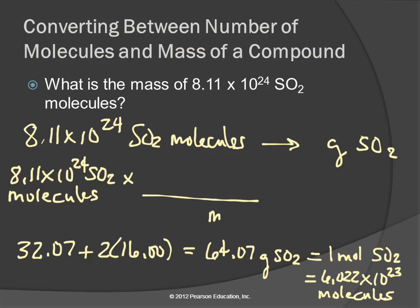We want to divide by molecules and multiply by grams. From our calculation of the molar mass, we know that there are 64.07 grams of SO2,